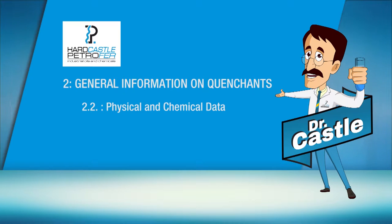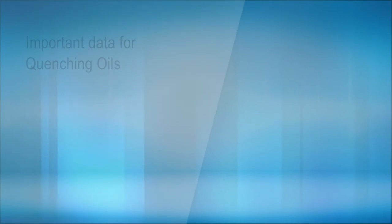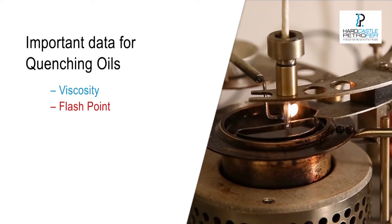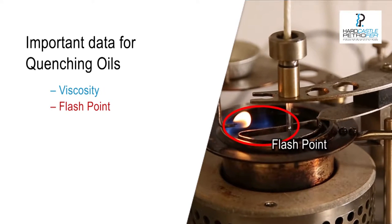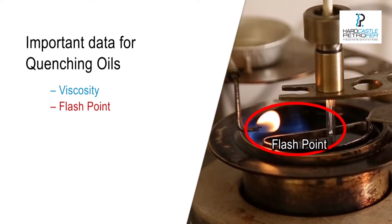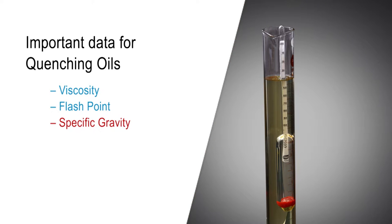Now we shall move on to discuss one of the most important aspects of selection of suitable quenchants: physical and chemical data. Important data for identification of quenching oils typically are viscosity, flashpoint, and specific gravity.